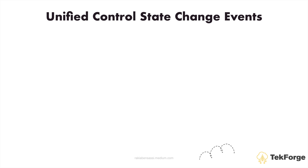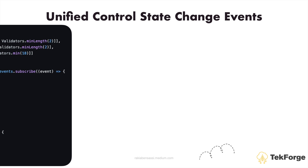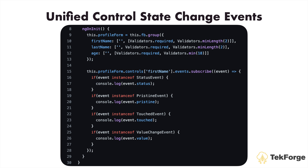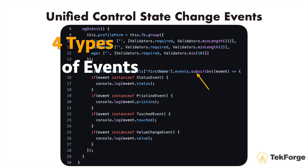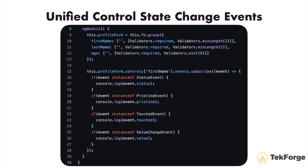The forms module in Angular 18 now includes unified control state change events, making it easier to manage form state and validation. When you subscribe to the events observable on AbstractControl, you can get four distinct types of events: Status event, which reflects the current status of the form control; Pristine event, which fires when the control has been interacted with; Touched event, which fires when the control is touched; and Value change event, which returns the updated value of the control.